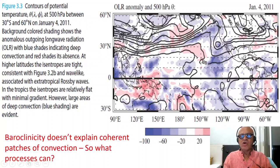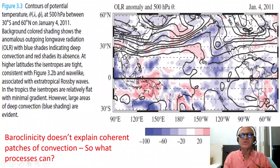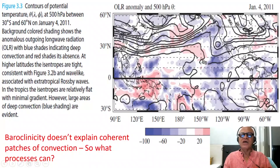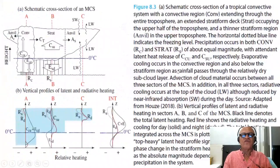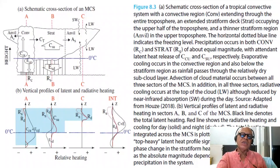Now we can talk about structures of convection, the moving features, what happens when the MJO tries to cross the maritime continent, why it gets deflected to the south on some occasions, and how the ITCZ moves and so forth. Out of all that recent knowledge came this detailed structure of the mesoscale convective system.